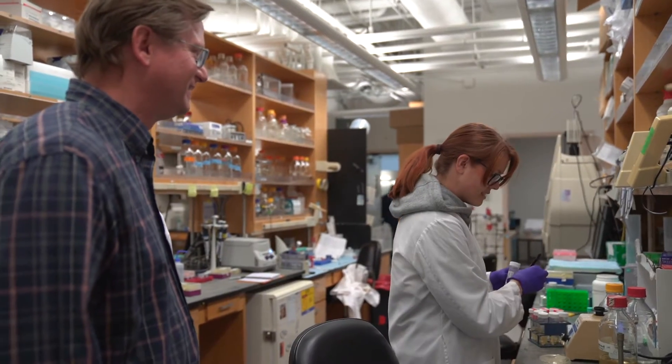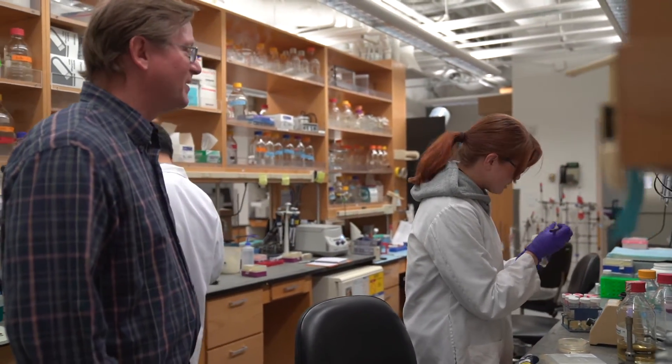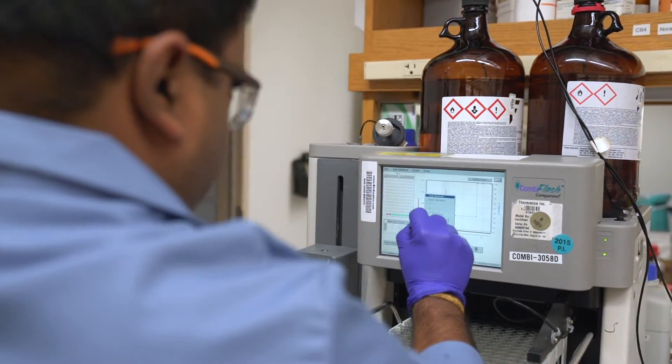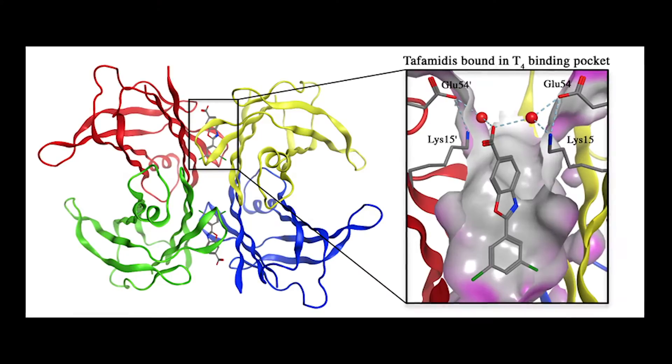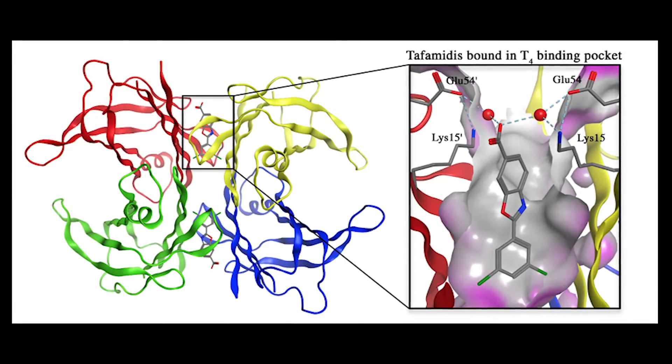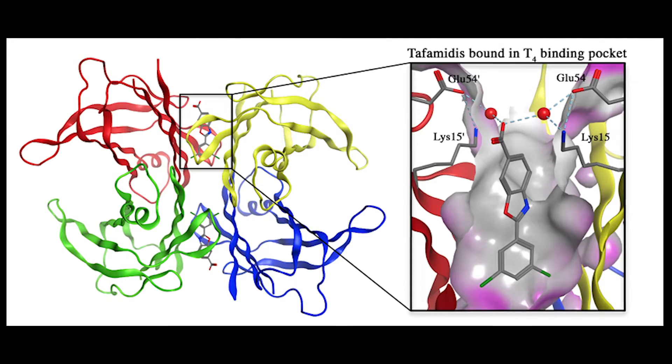We had to make a lot of small molecules in order to find the special one. After making a thousand or so, we came up with the drug that we now call tafamidis, which is a potent and safe small molecule stabilizer of transthyretin, and thus prevents the degenerative diseases associated with its aggregation.